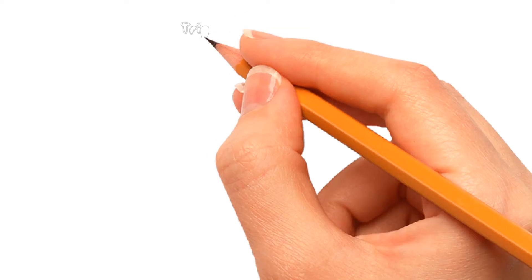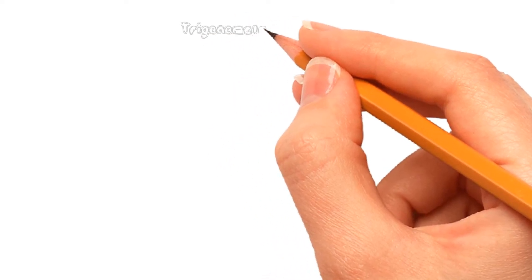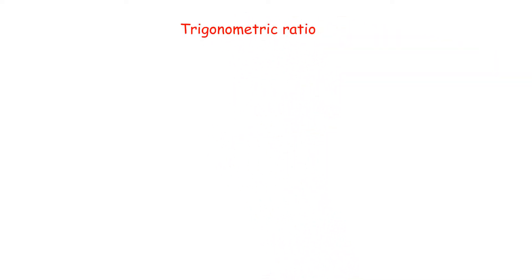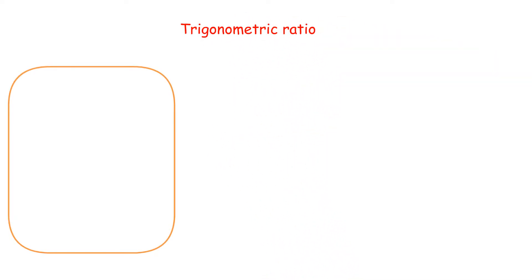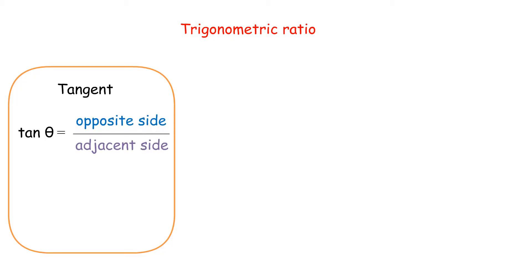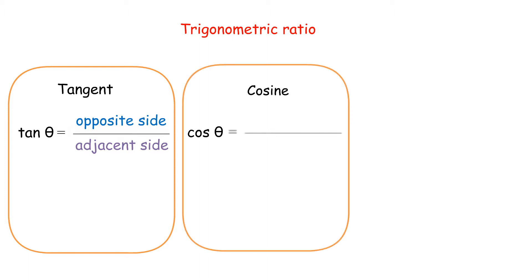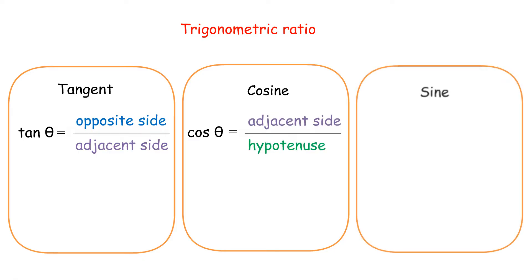There are three types of trigonometric ratio. First, ratio of tangent: tan θ equals opposite side over adjacent side. Second, ratio of cosine: cos θ equals adjacent side over hypotenuse. Third, ratio of sine: sin θ equals opposite side over hypotenuse.